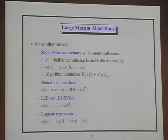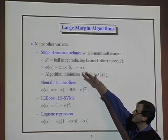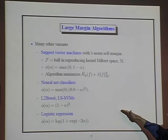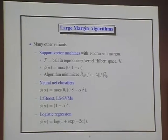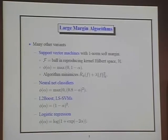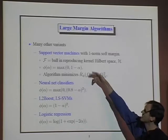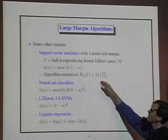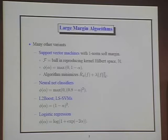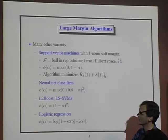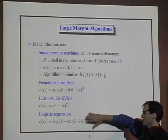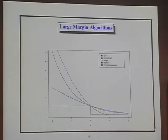Adaboost is not the only algorithm in this category. Support vector machines can be viewed this way, where the margin cost function is the hinge loss — decreasing linearly until one and then zero — with the class of functions being a ball in a reproducing kernel Hilbert space. Neural net classifiers work with a quadratic or truncated quadratic loss. Logistic regression can also be viewed in this way.